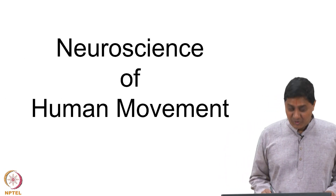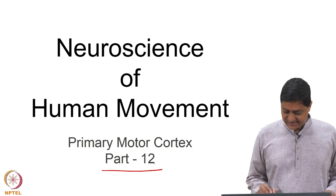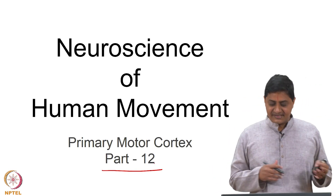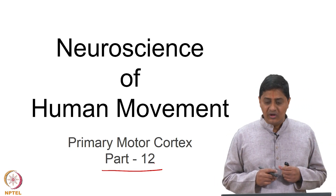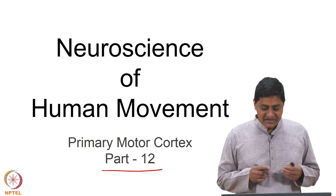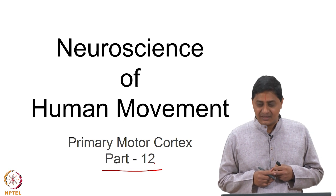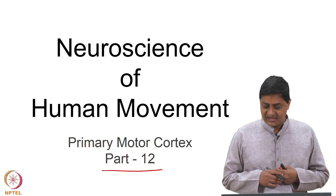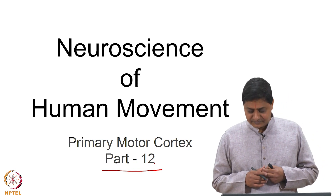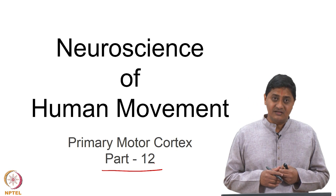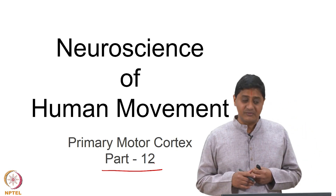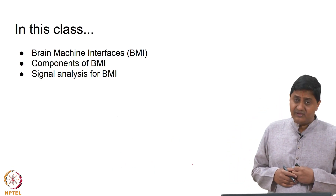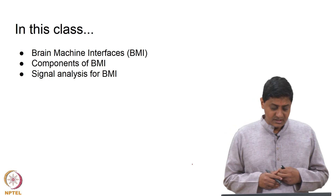Welcome to this class on Neuroscience of Human Movement. This is Part 12 of our discussion on primary motor cortex. We have been discussing lesions, how the motor map is dynamic, and how plasticity can play a possible exciting role in improving brain function or improving motor function in people with compromised systems.